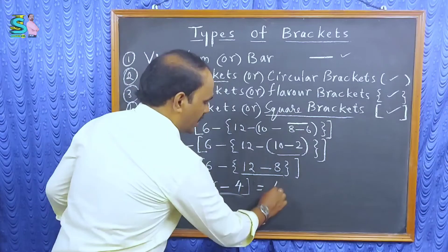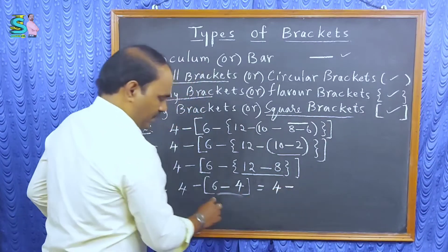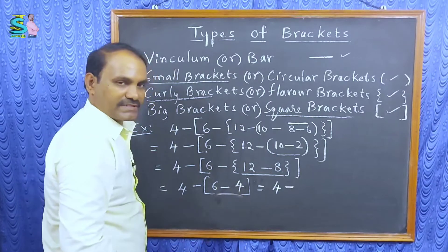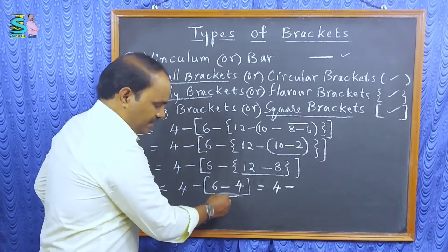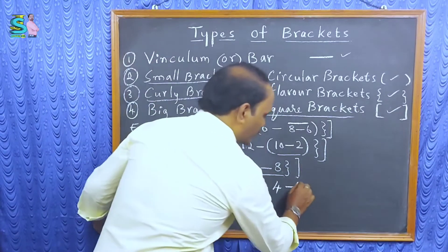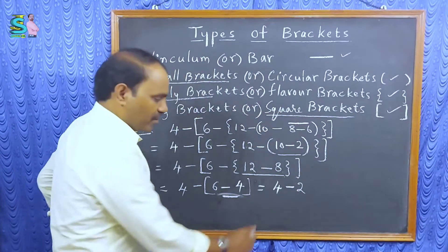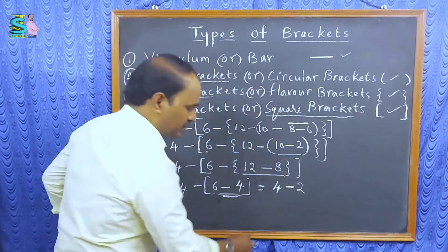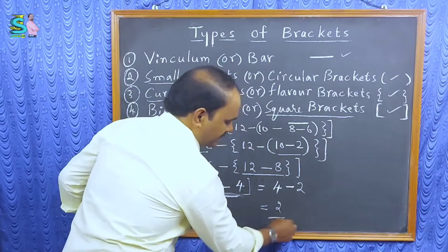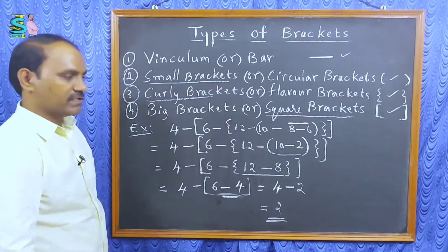Here, 4 minus, 6 minus 4. How much here, 6 minus 4? 2. 4 minus 2. What is 4 minus 2? 2. This one is your answer. Is it understood?